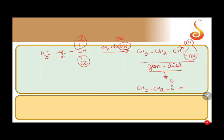So when will I get a ketone? If I have both halogen atoms on the same carbon, then both will be replaced by nucleophile on reaction with alkali, and then H₂O will be lost.